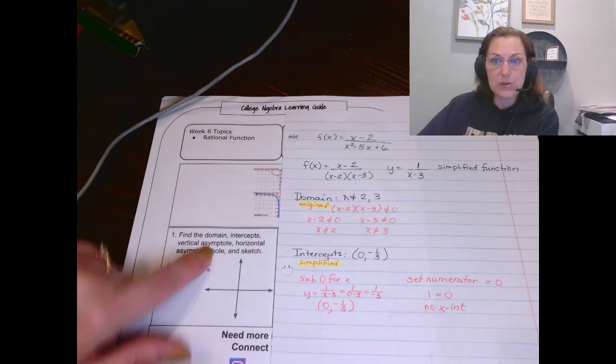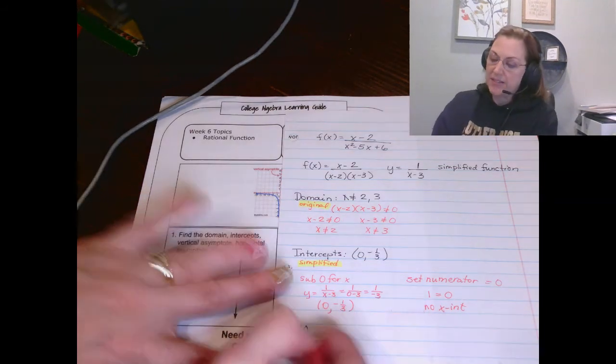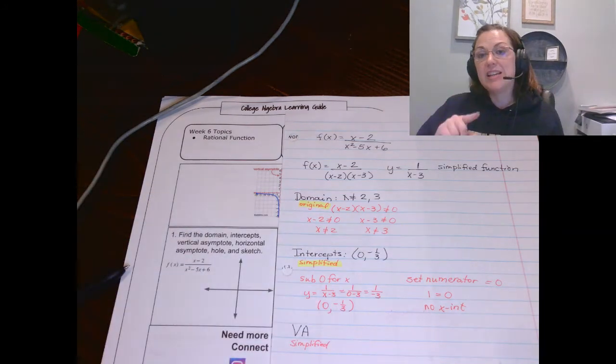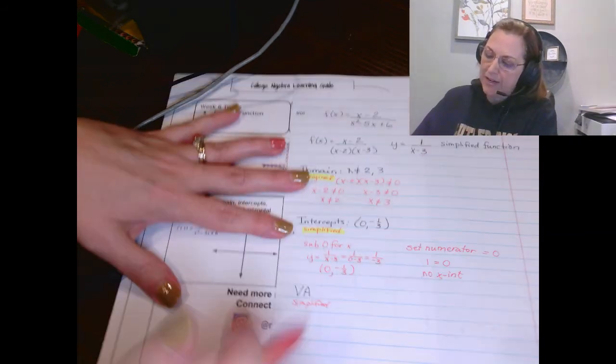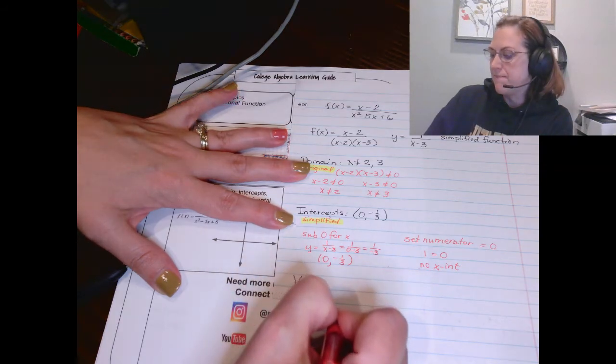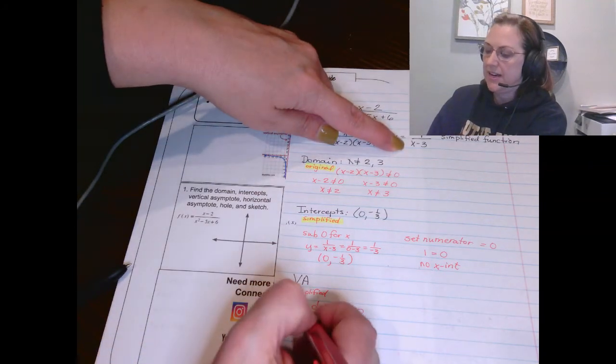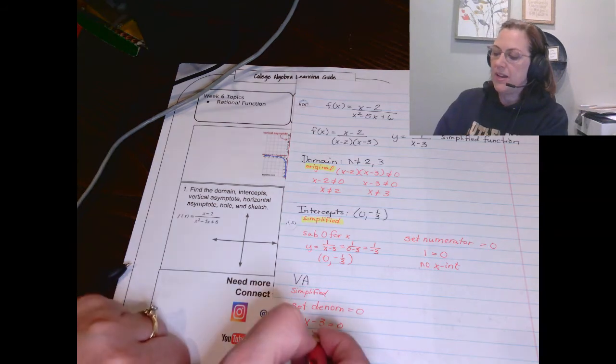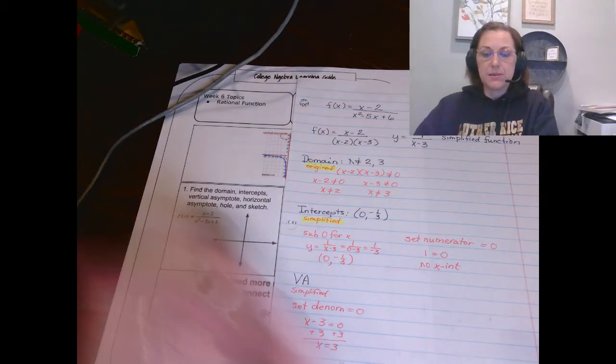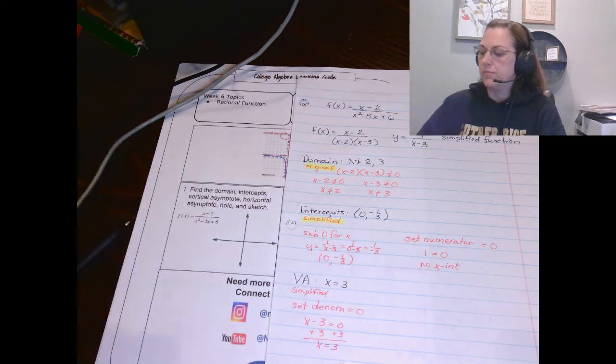Then we want to find the vertical asymptote. And again, this one comes from the simplified function. To get the vertical asymptote, you're going to set denominator equal to 0. So you're going to take the x minus 3 and set it equal to 0. And you can add 3 to both sides. You're going to get that x equals 3 is your vertical asymptote.